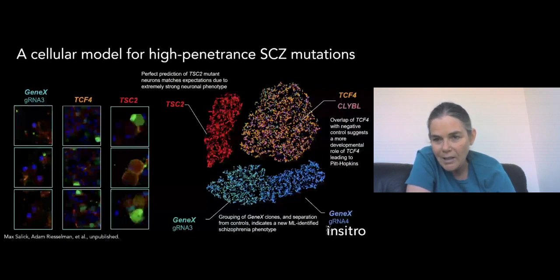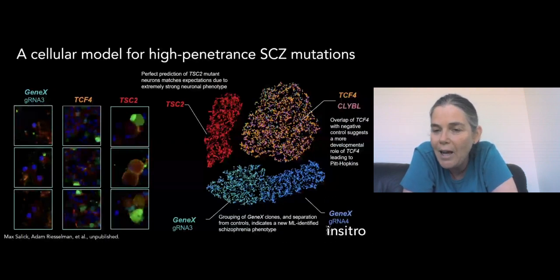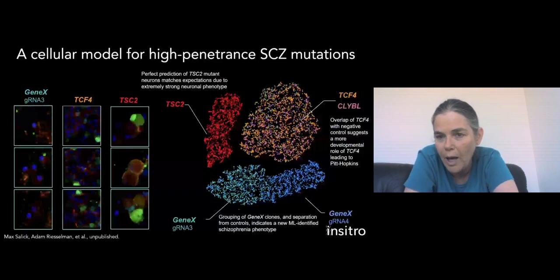On the right-hand side, you see two overlapping clusters. One is called TCF4 and the other is called CLYBL. CLYBL is a negative control. It's a mutation that's known not to act on neurons. TCF4, which leads to Pitt-Hopkins disease, was not fully understood. It was presumed that it might act on a cell type other than neurons, but it wasn't known for a fact. And here we see a perfect overlap between TCF4 and CLYBL, suggesting that indeed the effect of TCF4 is in cells other than neurons.